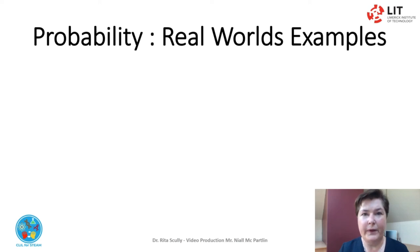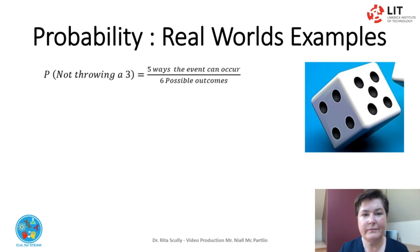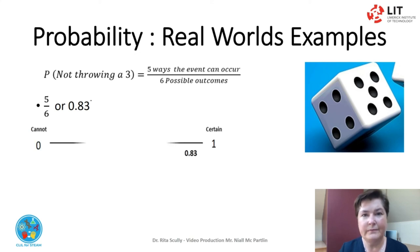Probability can also assess the risk of something not occurring. Let's look at the probability of not throwing a 3. Again we are considering our six-sided dice. The probability of not throwing a 3 can occur in five ways: 1, 2, 4, 5, or 6. There are six possible outcomes. This can be written as 5 over 6, or 0.83. This can be represented on the probability line as 0.83.